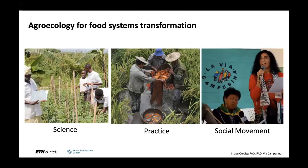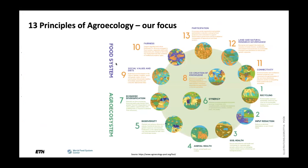Agroecology has three pillars: it is a science, a set of practice, and a social movement. Throughout this threefold definition, it's very key to broaden the view and not only focus on one particular principle but see it in a larger context of agroecology.